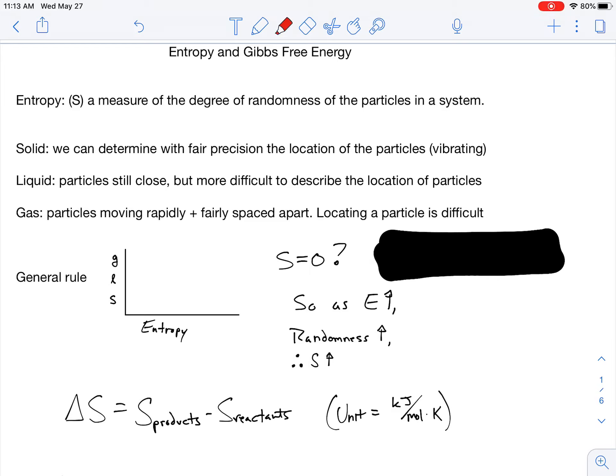All right, you crazy kids, let's jump into entropy and Gibbs free energy. Entropy, variable S, is a measure of the degree of randomness of the particles in the system.